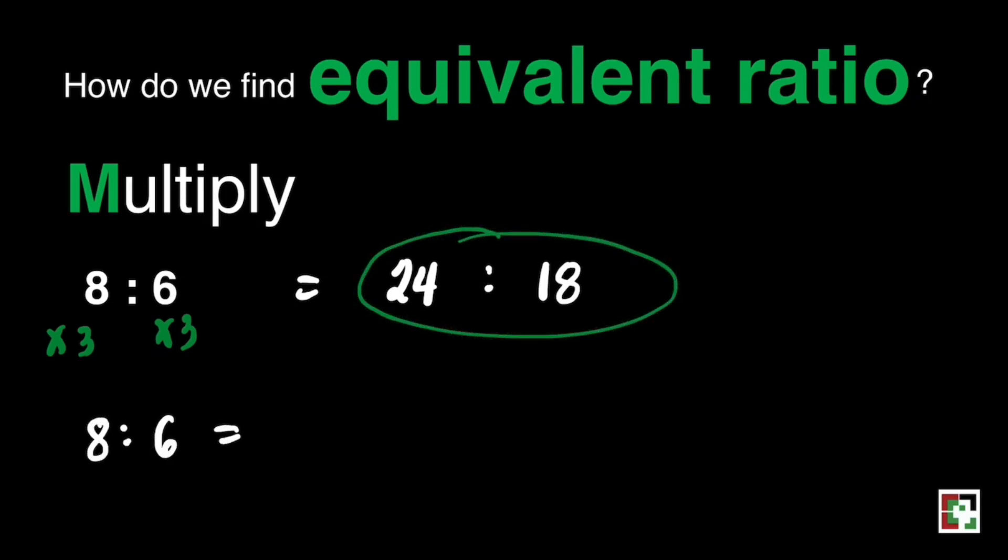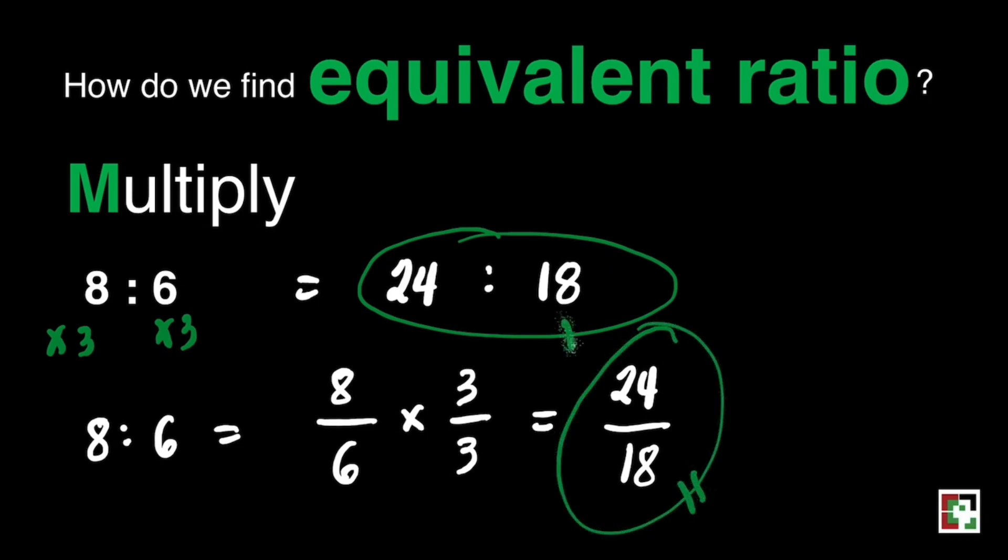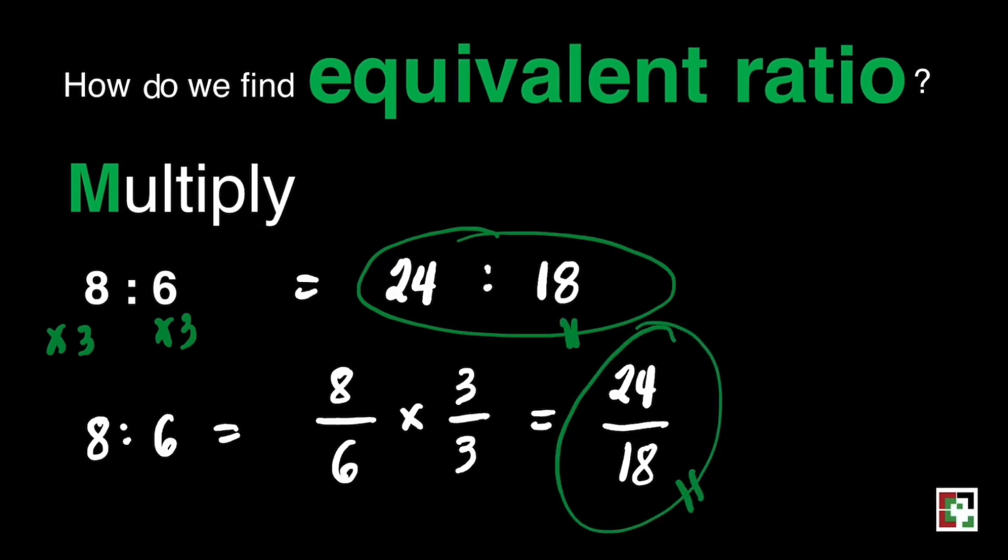But we can also write this into a fraction. That's 8 over 6. Then we can multiply our fancy fraction which is 3 over 3. That will give you 8 times 3 is equal to 24, and 6 times 3 is equal to 18. I know you got this. It's very easy, right?